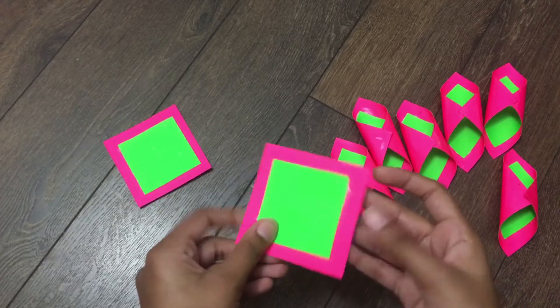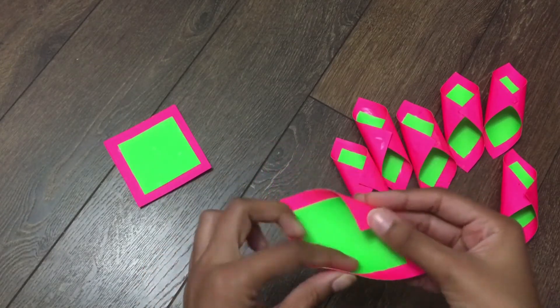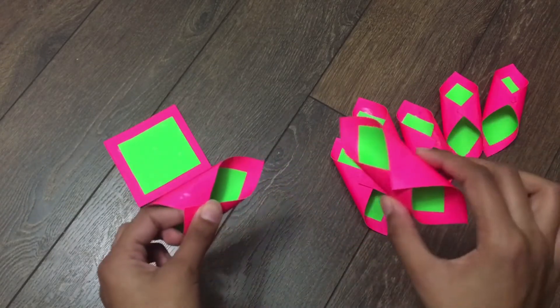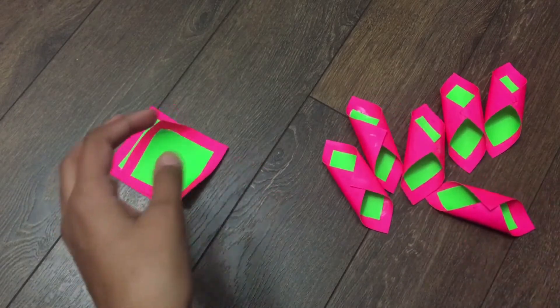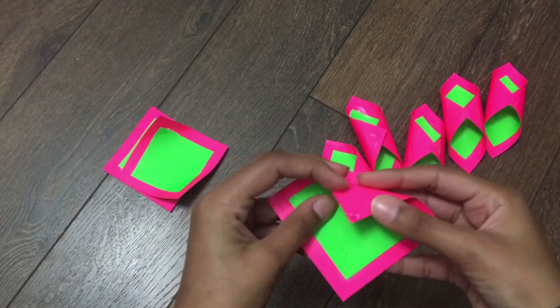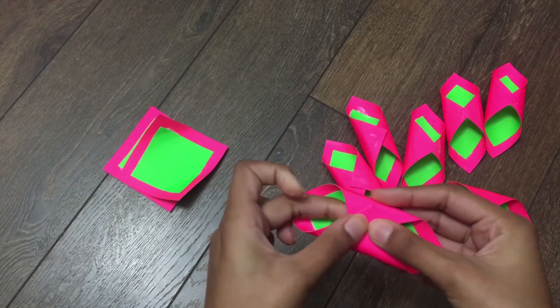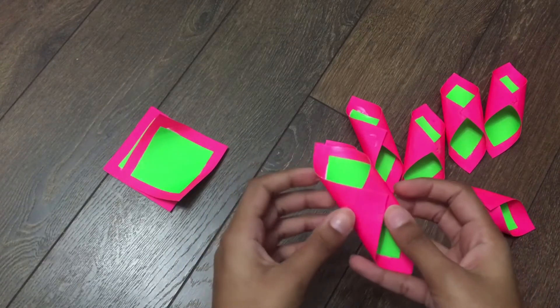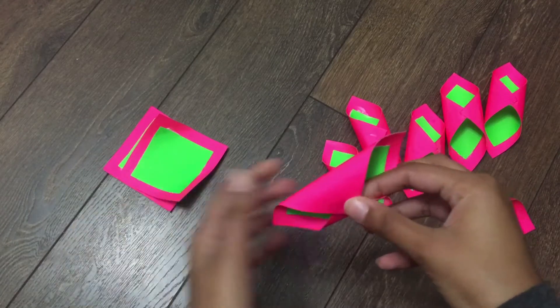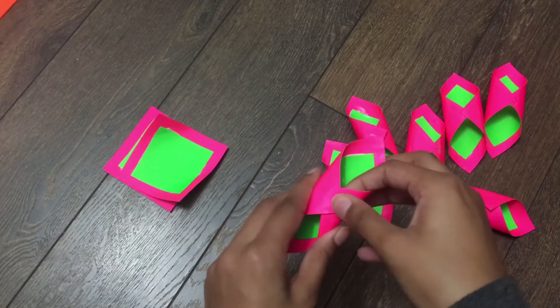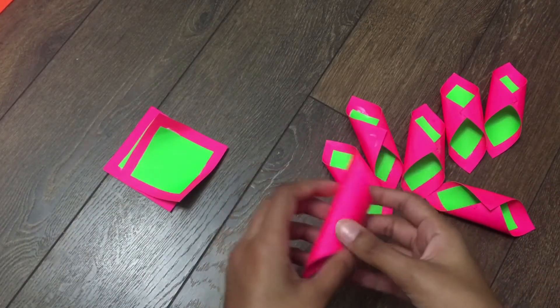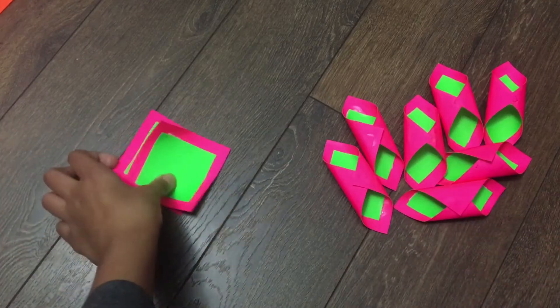Now what we're going to do is glue the two opposite ends together to make it into a cone shape. So I have glue on one end and I'm just gluing the other end onto it. And you do it to all of the nine.